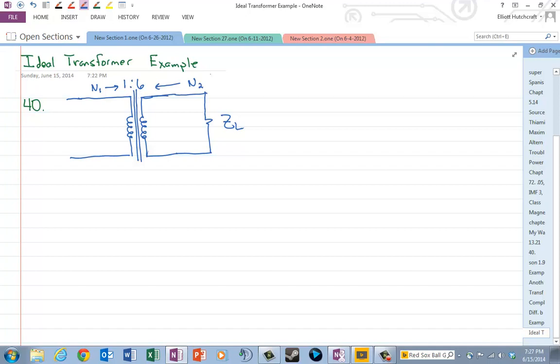Or just A. So a lot of times you may see this written as 1 to A, or maybe just A, for the turns ratio. And so if you know A, you don't necessarily need to know N1 by itself or N2 by itself. It's the ratio of the two that's important.